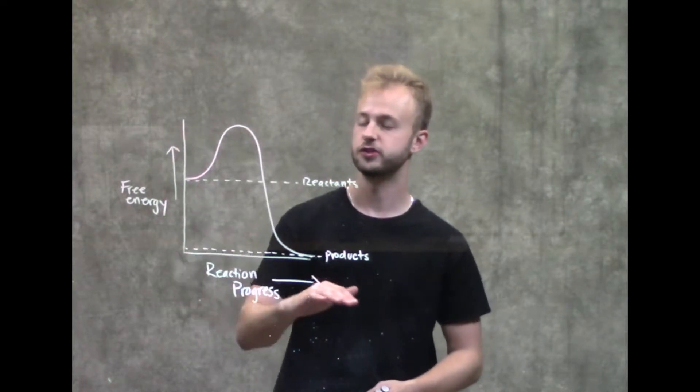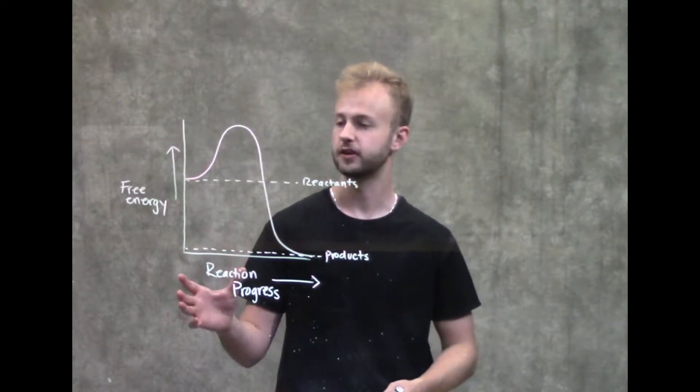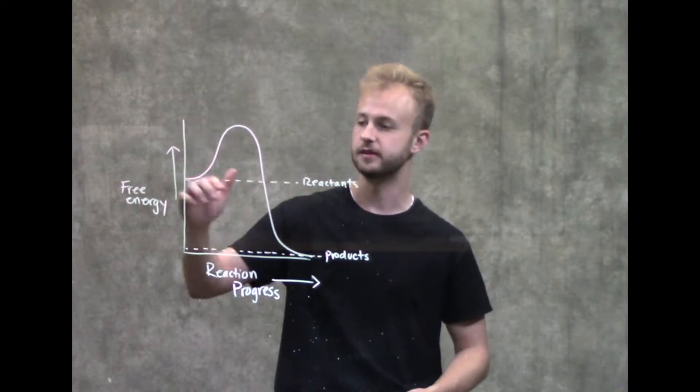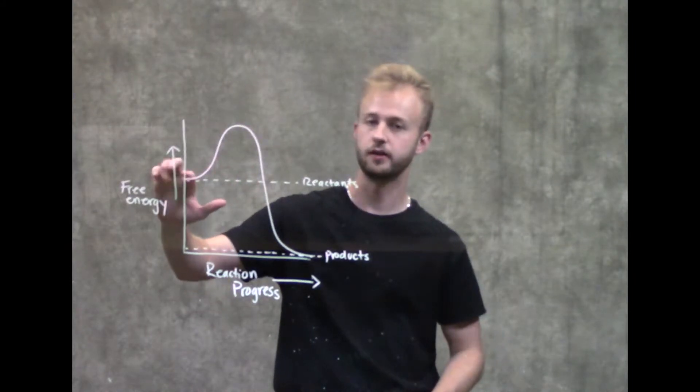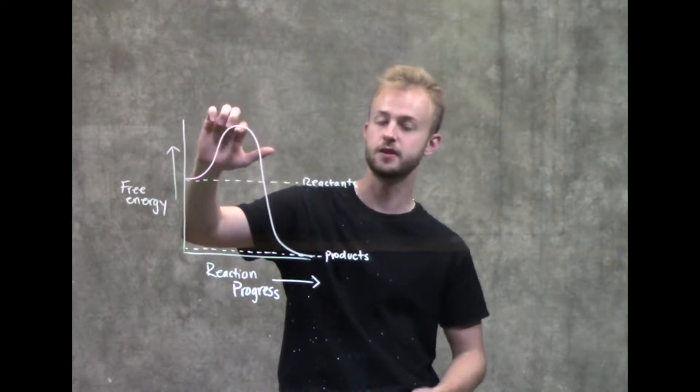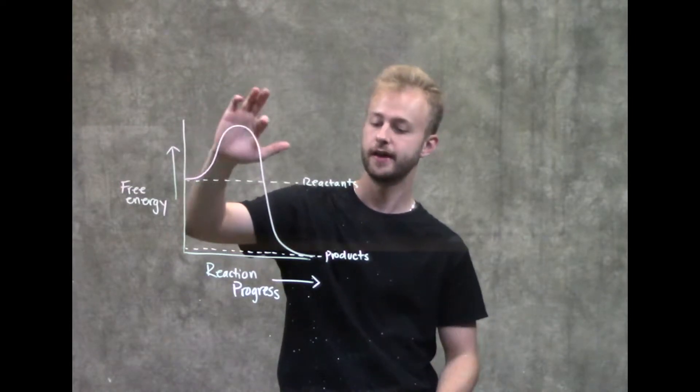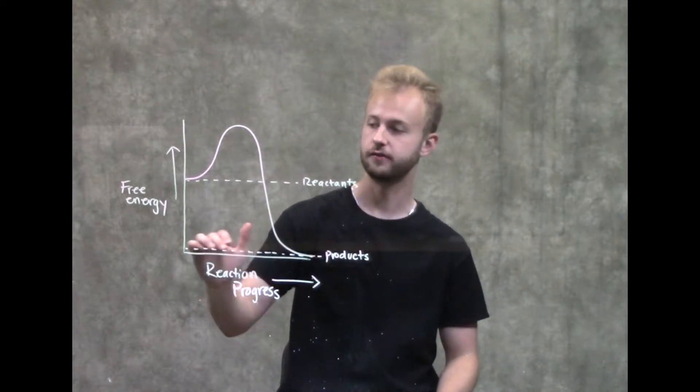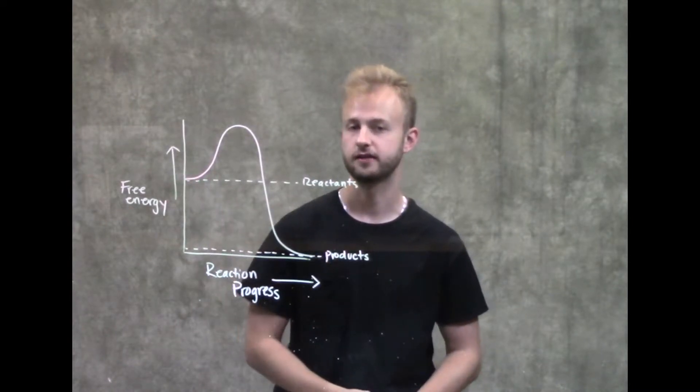We have our free energy diagram right here for a reaction. You're starting with the free energy of our reactants, it'll go up to the transition state which is right here at the peak where you're going to have the most free energy, and then it'll fall down to our products which have a lower free energy than our reactants in this case.